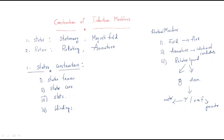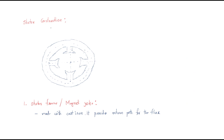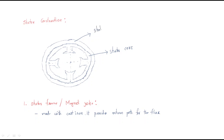This diagram represents the stator construction. Looking at the diagram, we can divide it into two parts. The complete inner area — this part — is known as the stator core. The outer part, which is round in shape, is called the stator frame or magnetic yoke.